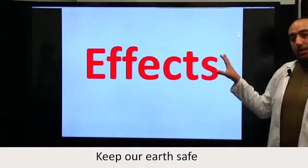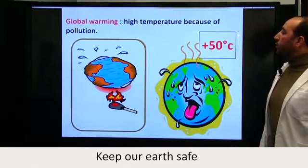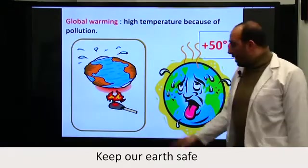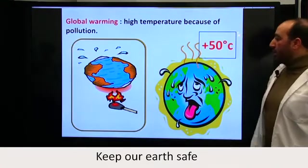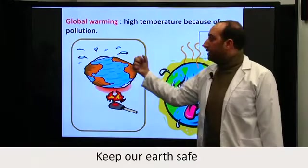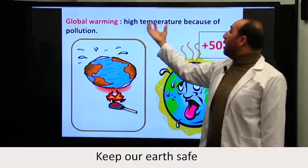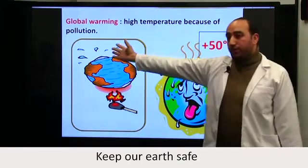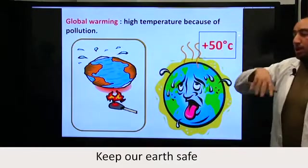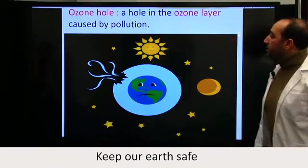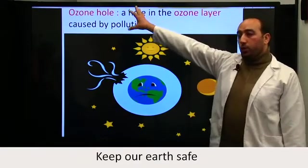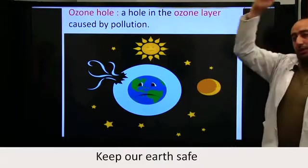Among the effects, the first one is global warming. As you can see, the earth is sweating and burning, meaning there is a high temperature because of pollution. This is one of the immediate consequences of pollution. The second effect is the ozone hole — the earth is covered by layers, and one of them is the ozone layer.